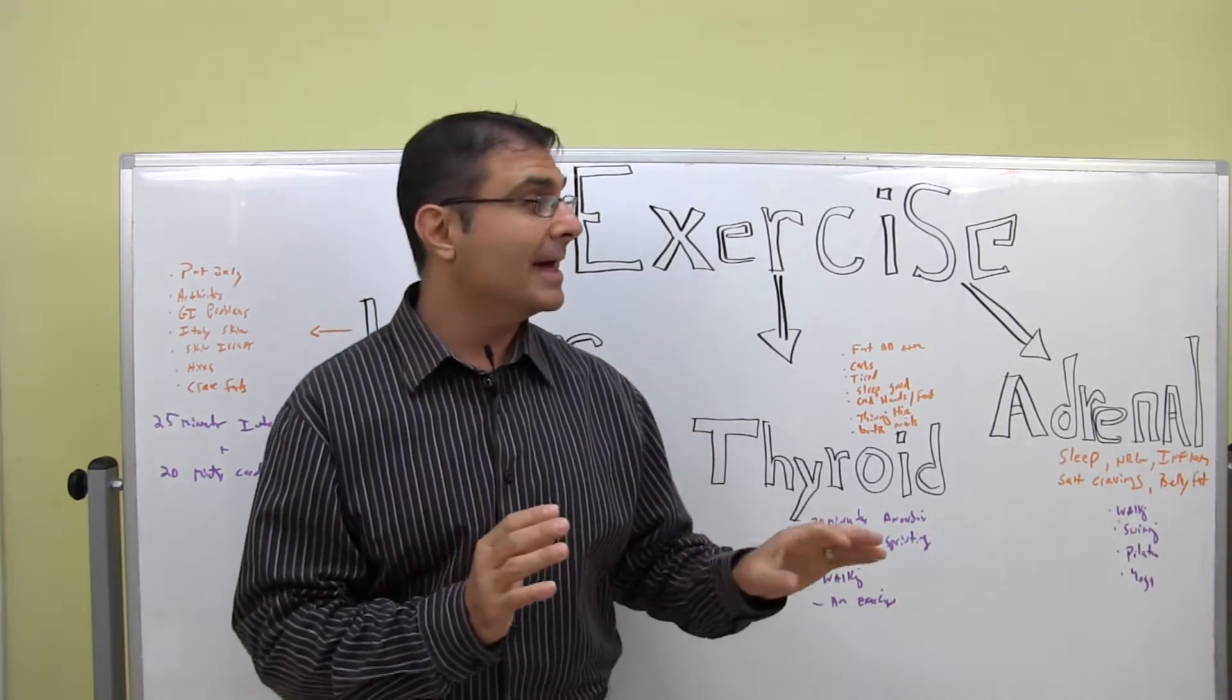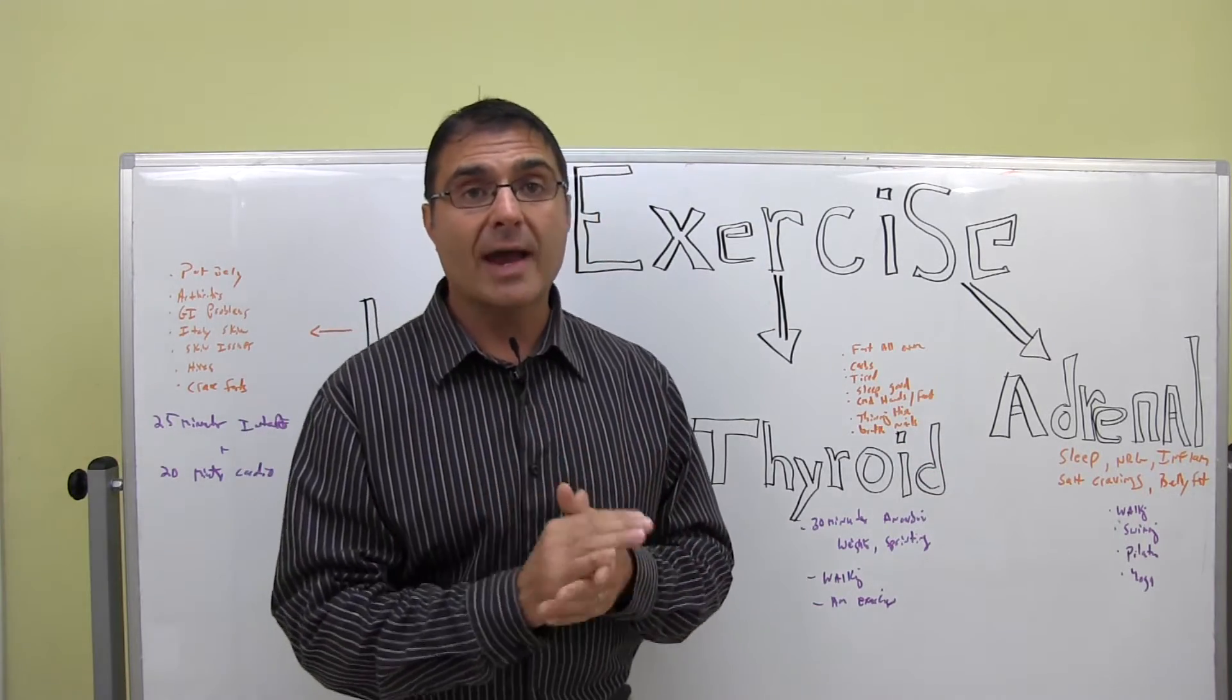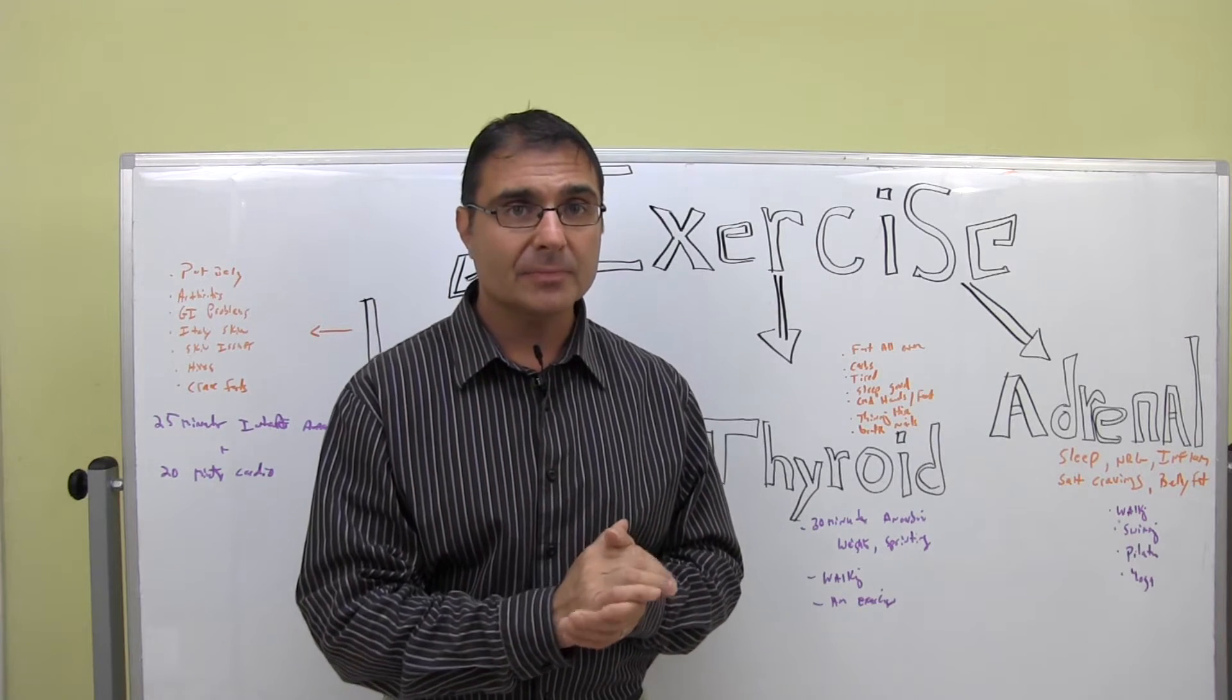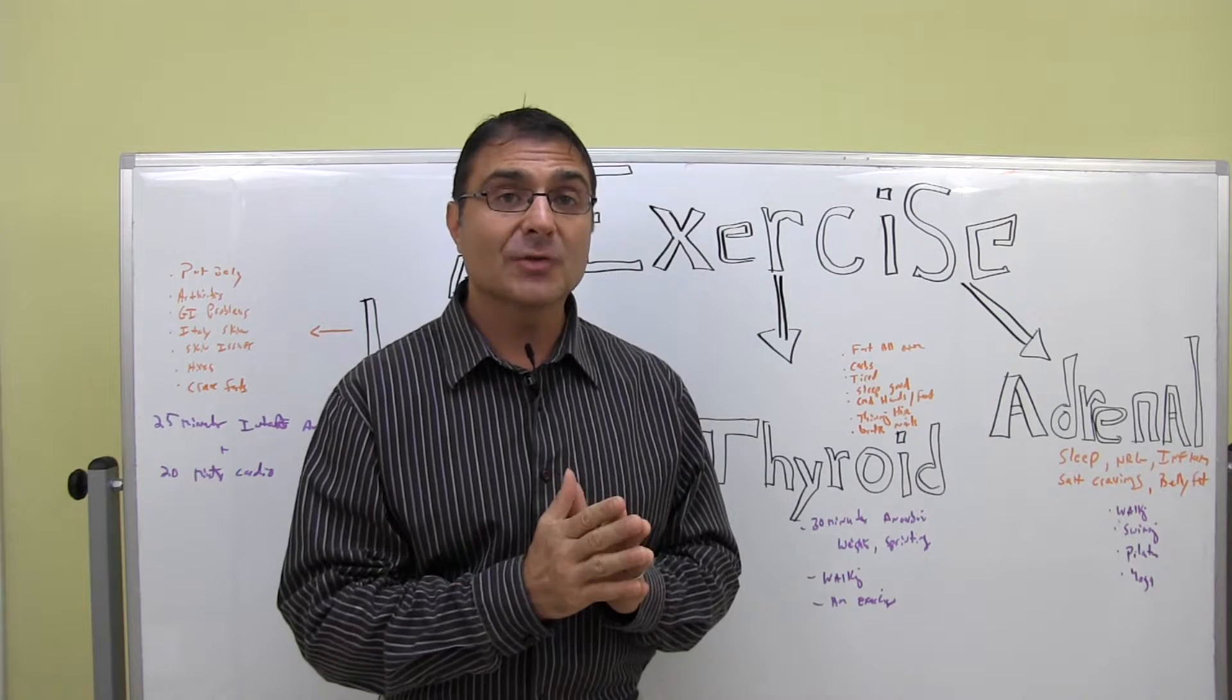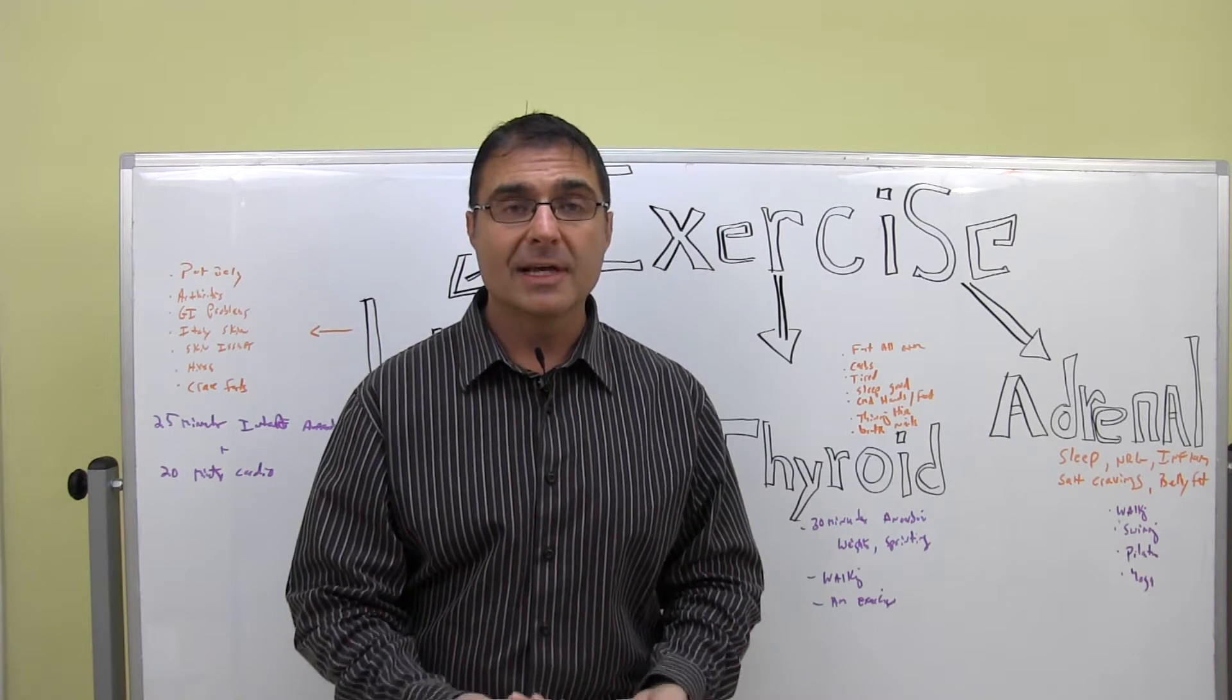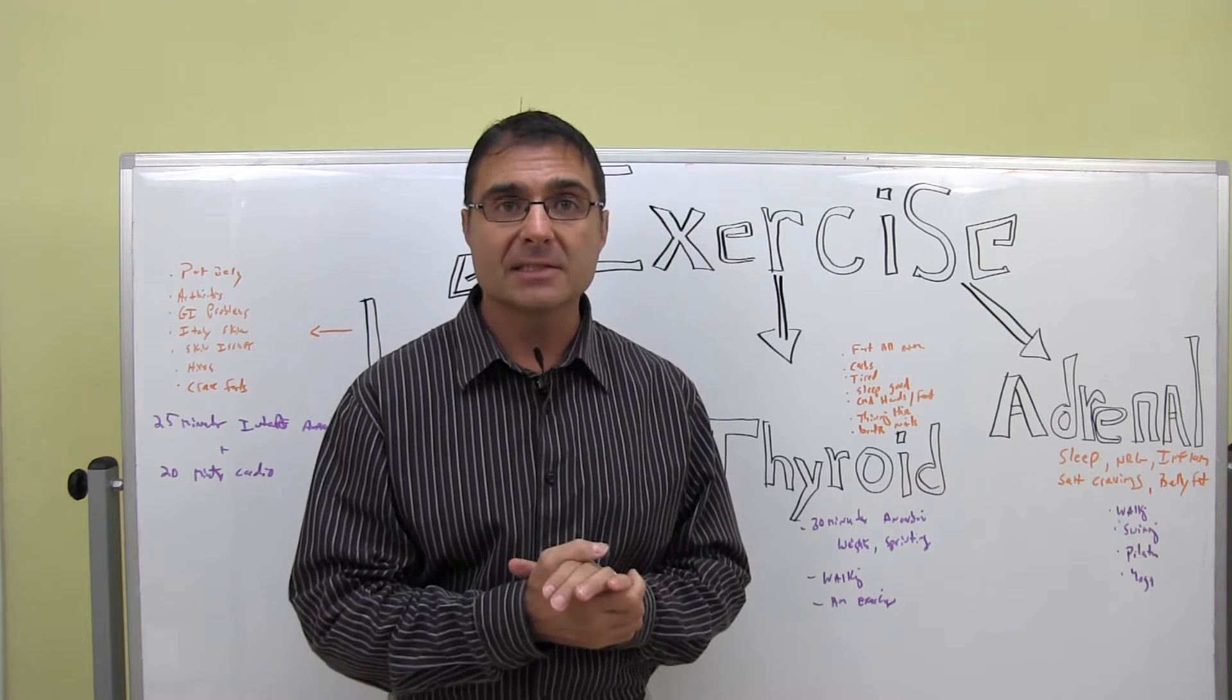The first I wanted to talk about is the adrenal glands. The adrenal glands, those are the two triangular shaped glands that sit directly above your kidneys. Now, when a person has adrenal problems, they typically have belly fat that hangs over their belt. They don't sleep well. They'll wake up at two or three in the morning and have difficulty falling back to sleep.